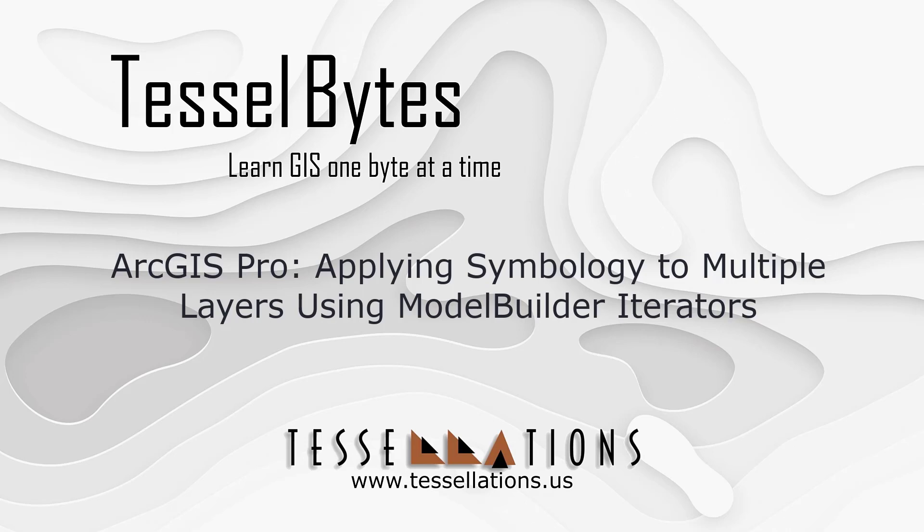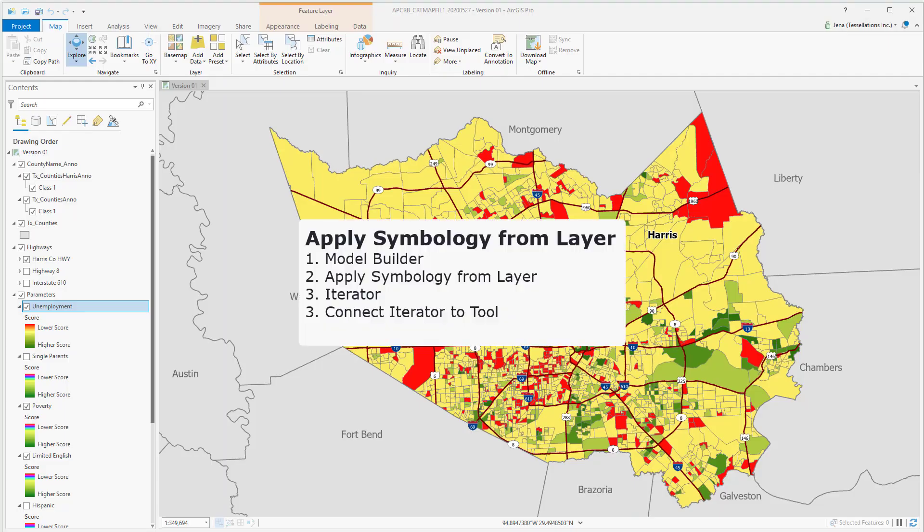Welcome to Tesselbytes, where we survey GIS in small bytes. Today we'll be covering ArcGIS Pro, applying symbology to multiple layers using Model Builder iterators. Let's get started.